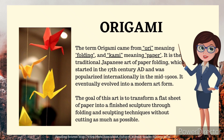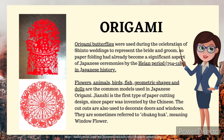Origami: The term origami came from 'ori' meaning folding and 'kami' meaning paper. It is the traditional Japanese art of paper folding which started in the 17th century AD and was popularized internationally in the mid-1900s. It eventually evolved into a modern art form. The goal is to transform a flat sheet of paper into a finished sculpture through folding and sculpting techniques without cutting as much as possible. Origami butterflies were used during Shinto weddings to represent the bride and groom, making paper folding a significant aspect of Japanese ceremonies by the Heian period (794–1185). Flowers, animals, birds, fish, geometric shapes, and dolls are the common models used in Japanese origami.